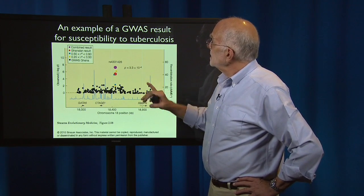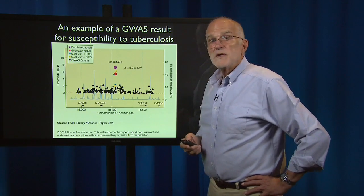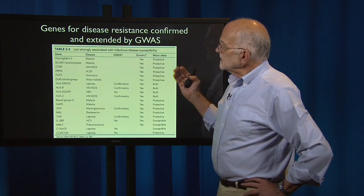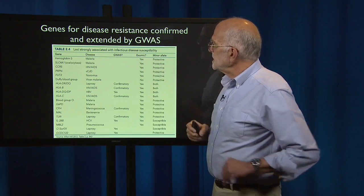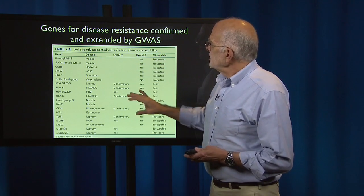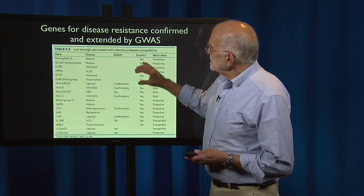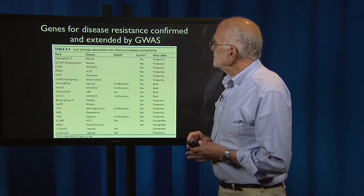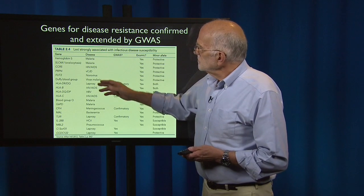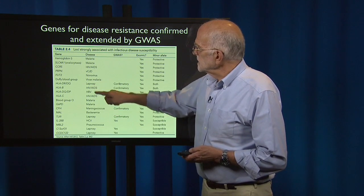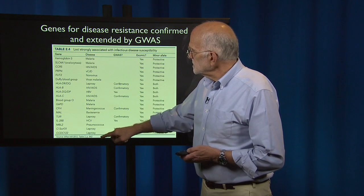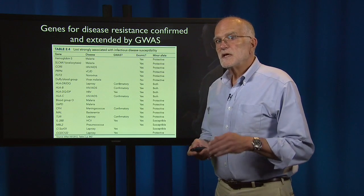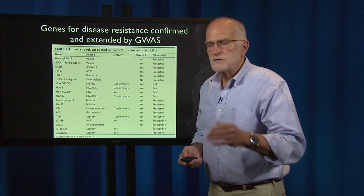In particular, this result is for tuberculosis, using mostly results from people in Africa. Using that method, here is a list of genes for disease resistance that were confirmed and then extended by GWAS. Many of the ones seen before appear at the top, but quite a few others have been added. In addition, we find protection for particular variants against norovirus, leprosy, meningitis, and bacteremia. Interestingly, there are four entries for leprosy, indicating how important leprosy has been as a selective agent in recent human history.